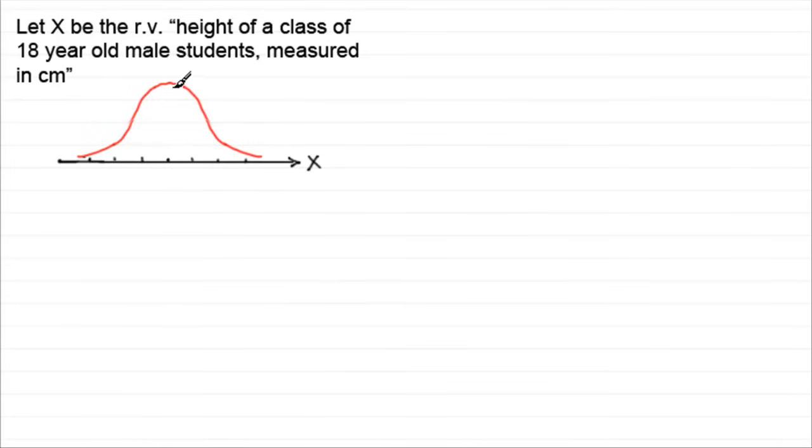It would be centered around a mean height. Let's suppose that mean height was 180 centimeters. We often represent the mean as this symbol mu, mu being 180 centimeters in this particular case.